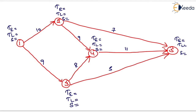Now we will calculate Te, Tl, and slack for all the events. For event 1, Te equals 0. For event 2, Te equals 10. For event 3, Te equals 9. For event 4, Te is the maximum of (9 + 8 = 17) and (10 + 9 = 19), so Te equals 19. For event 5, we compare (10 + 7 = 17), (9 + 5 = 14), and (19 + 11 = 30), so Te equals 30 as the maximum value.